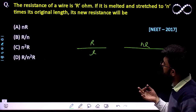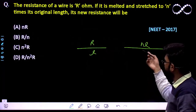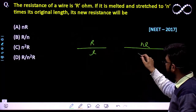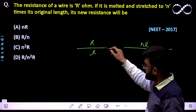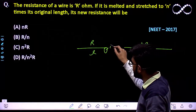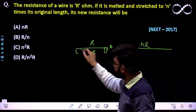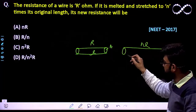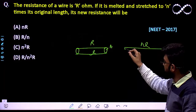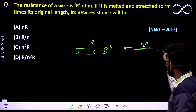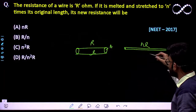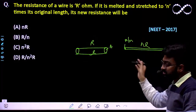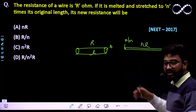So the new resistance will be: we know that when the length becomes N times, the area would also change. Suppose its area was A — the area would also decrease because its length has become N times. So the area would become A divided by N, because the volume of these two are equal.